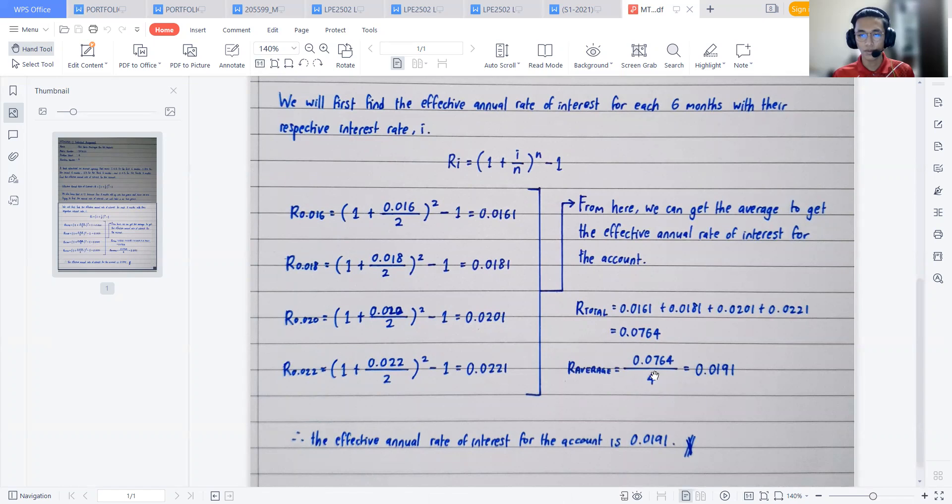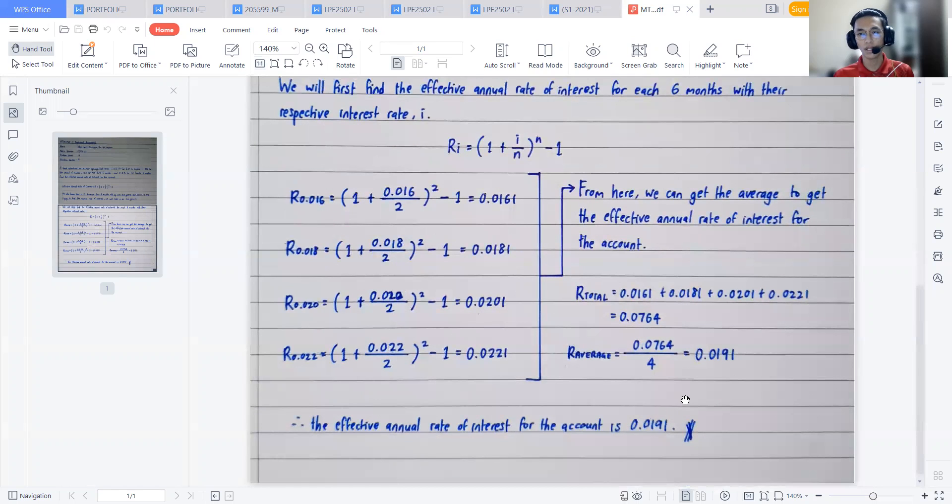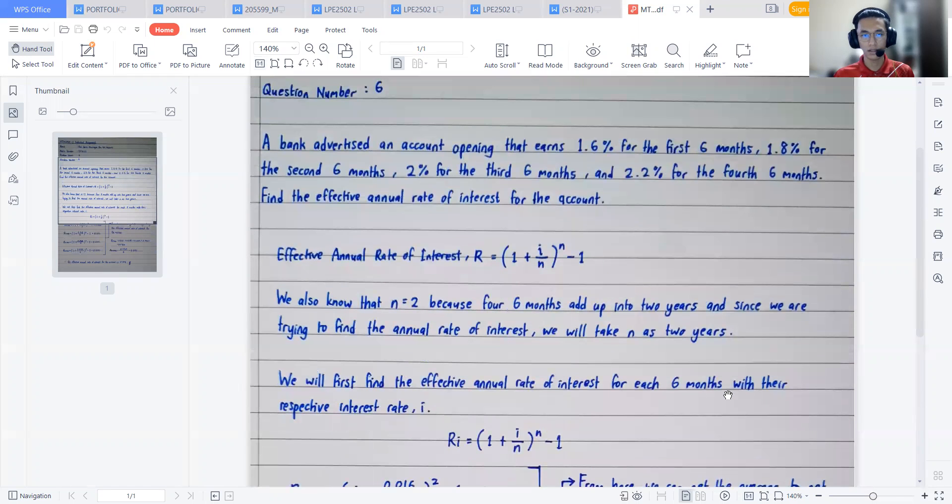And easy enough, we will just divide it by four in order to get the average rate of interest for this account, and we get 0.0191. That is the effective annual rate of interest for the account, for this account in particular. 0.0191 can also be translated into 1.91%. I would prefer to write it in this form, 0.0191, and that is the answer for this question.